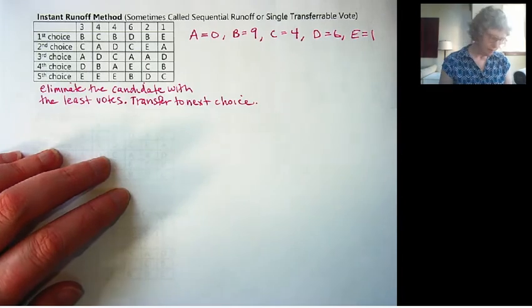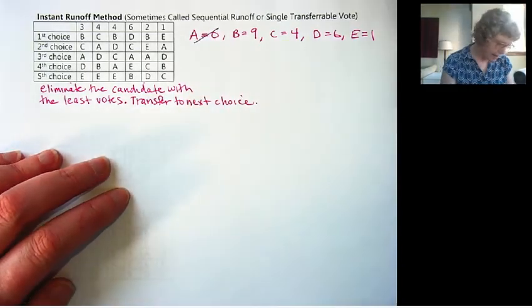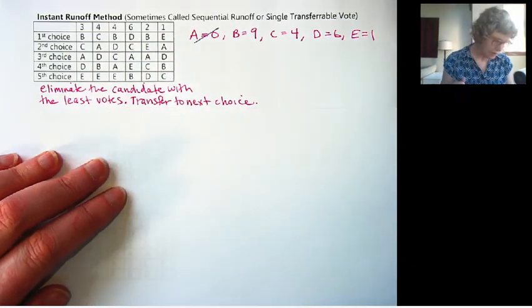Okay, so let me show you how this works. A has the least, so they cannot win this election. And we would look for A, but A didn't have any first place votes, so there's really nothing to do there.